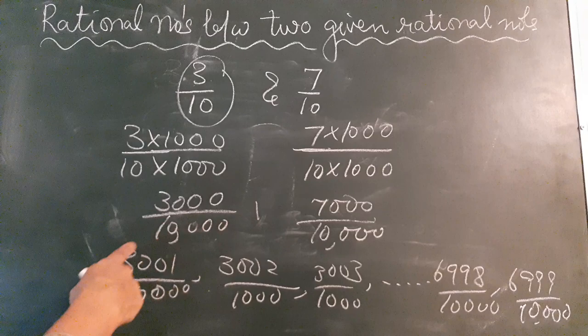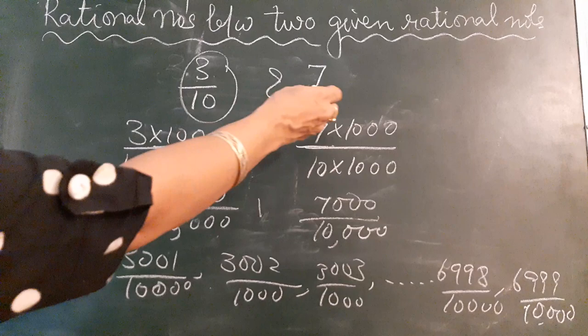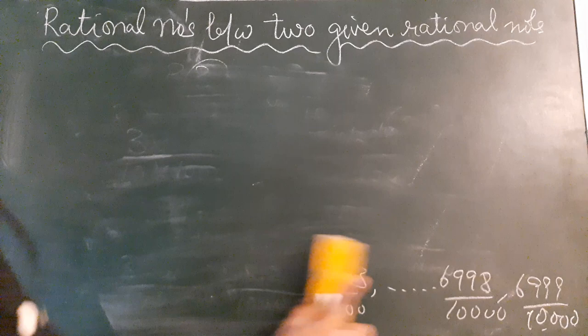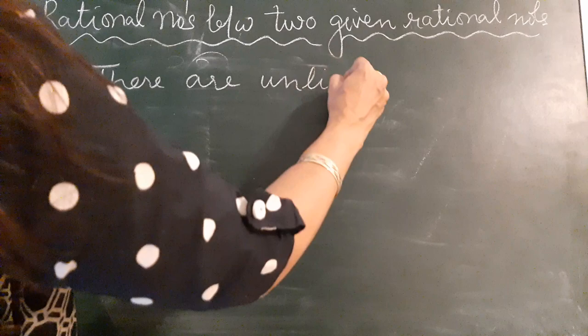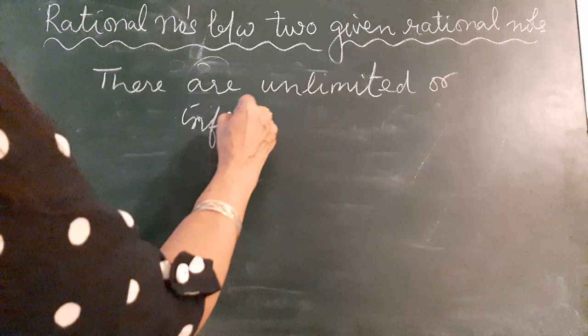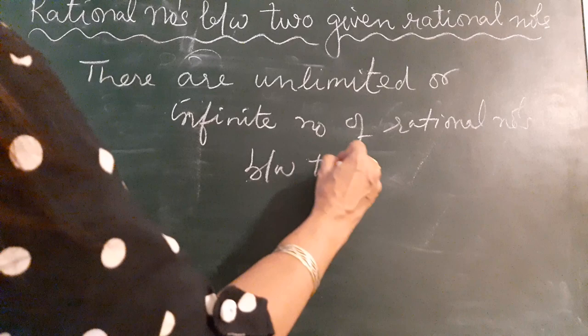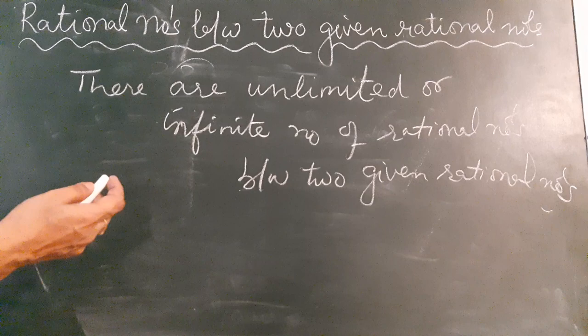And in this way, we can go on inserting more and more rational numbers between 3/10 and 7/10. So the number of rational numbers between two given rational numbers is not fixed or limited — we can say there are unlimited, or infinite, rational numbers between any two given rational numbers.